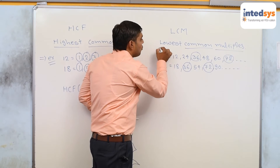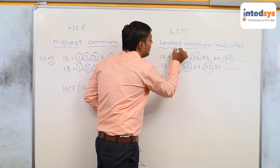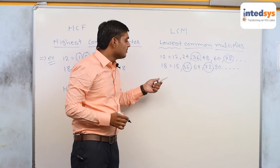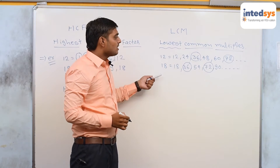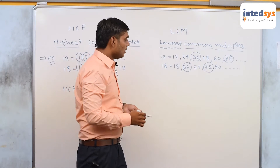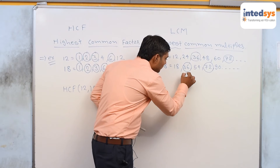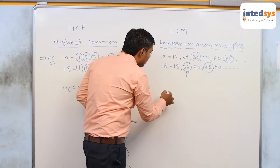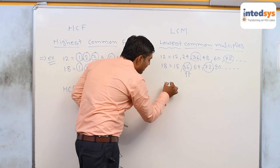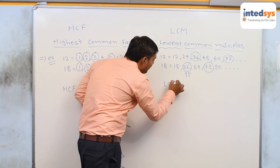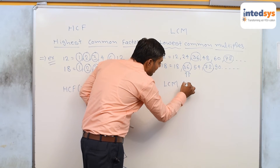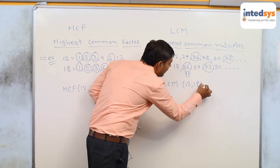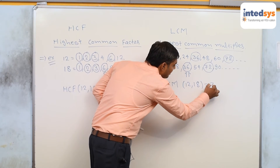And the lowest common multiple means the lowest number among the common multiples, and that is 36. So the LCM of 12 and 18 is 36.